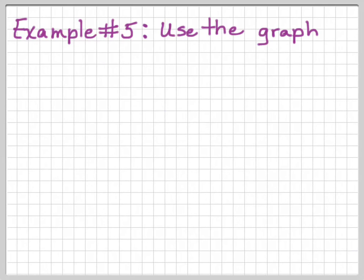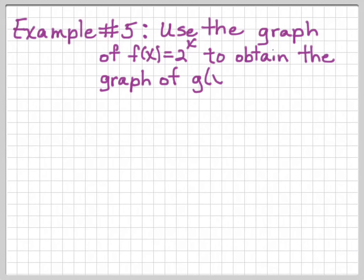Example number five. I've used the graph of f of x equals 2 to the x to obtain the graph of g of x is 2 to the x minus 3. So this is going to be a vertical shift.